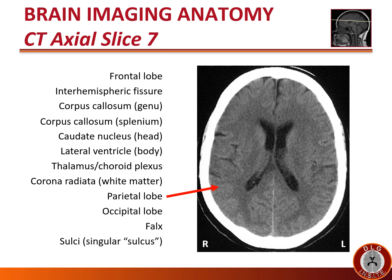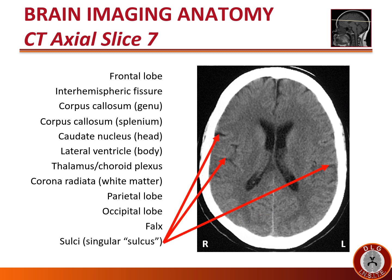The area of cerebral cortex posterior to the central sulcus is the parietal lobe. This slice is still inferior enough to see the occipital lobe posteriorly. The white or hyperdense line separating the two cerebral hemispheres is part of the dura called the falx. On a CT, the black or hypodense CSF-filled wrinkles in the cerebral cortex are called sulci, or individually a sulcus.